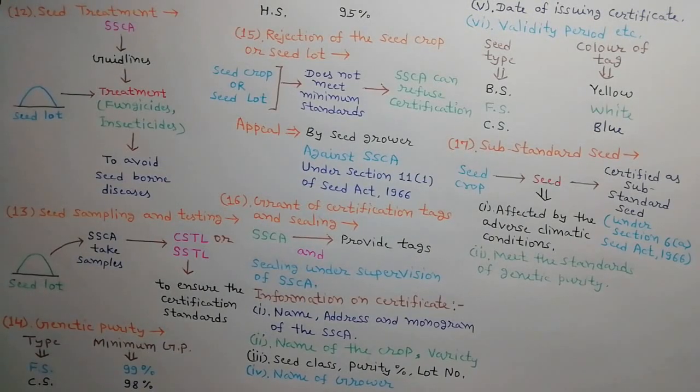The seed obtained from the seed crop affected by adverse climatic conditions such as drought or excessive rains, which meets the prescribed standards for genetic purity, will be certified as substandard seed under Section 6-a of the Seed Act, 1966, and the standard for which the seed is poor shall be mentioned.